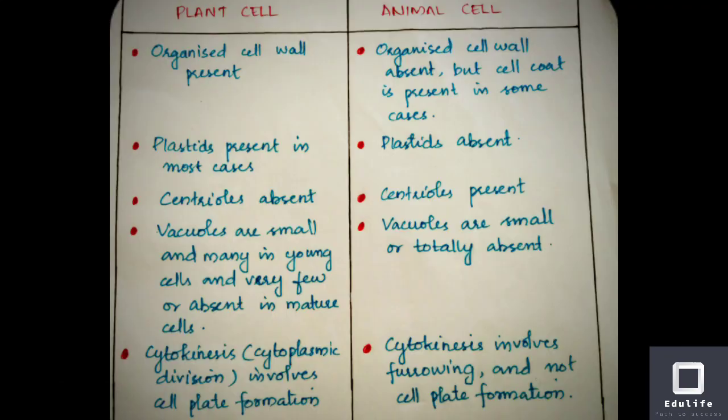Plant cells and animal cells differ in several ways. In plant cells, the plasma membrane provides rigidity to the cell. Plant cells have a chloroplast, which is involved in photosynthesis, while animal cells do not.